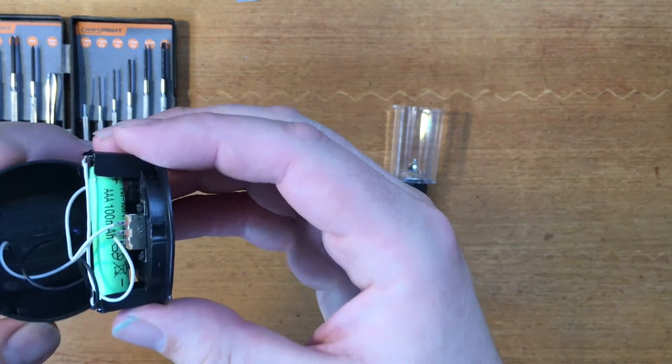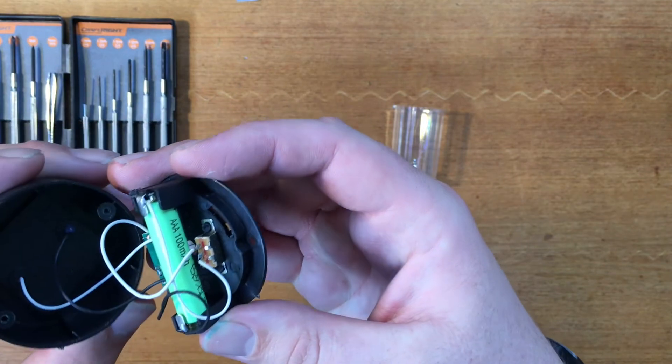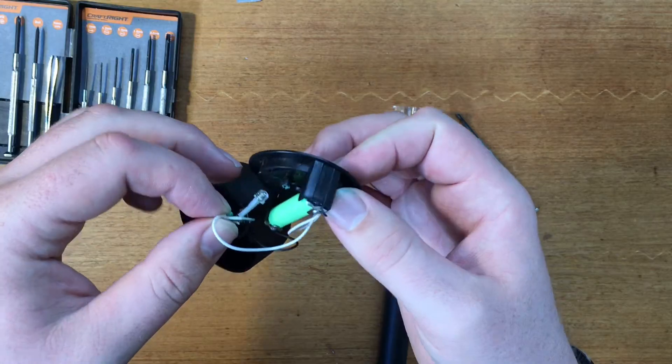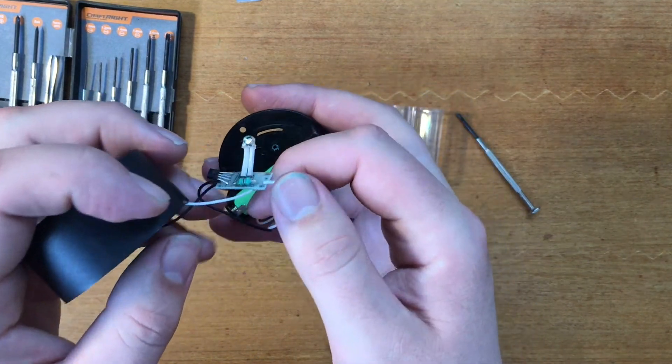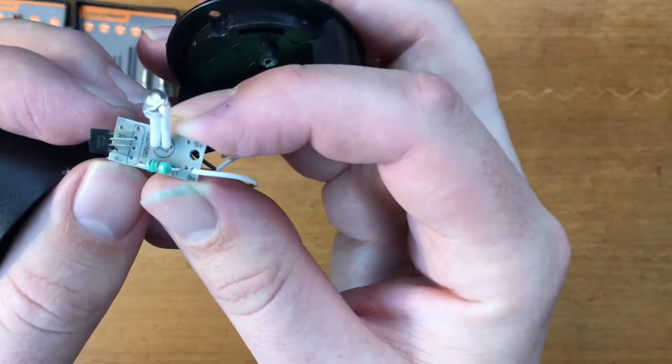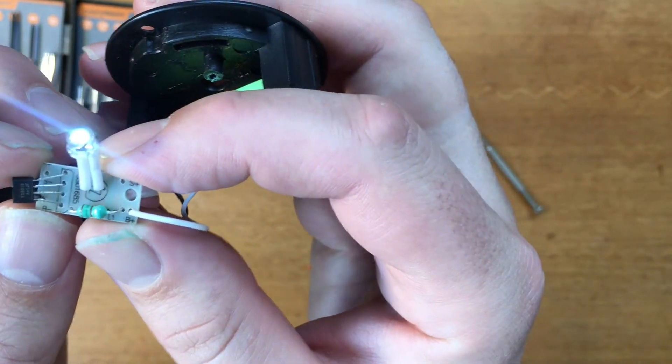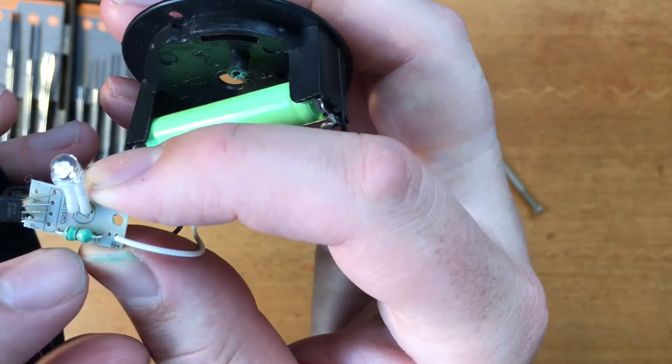Taking the screws out, it's actually got a decent sized battery in there and a little circuit board, so we'll have a look at that. There we go, we've got a transistor with four legs and I believe that is an inductor.